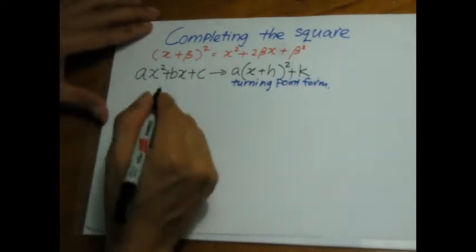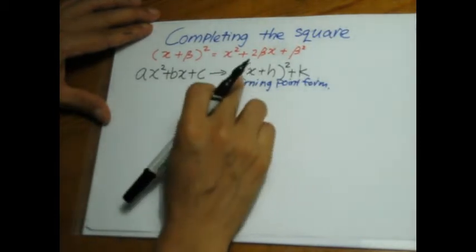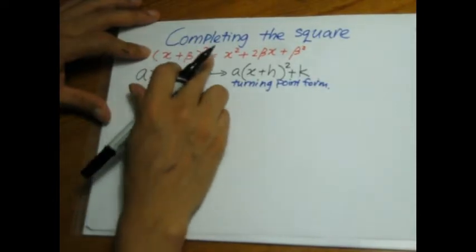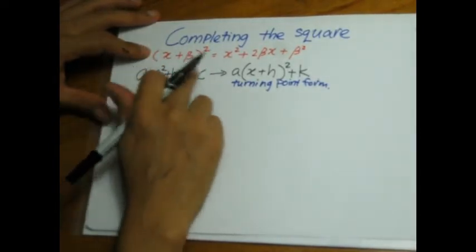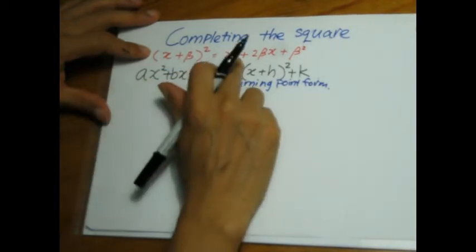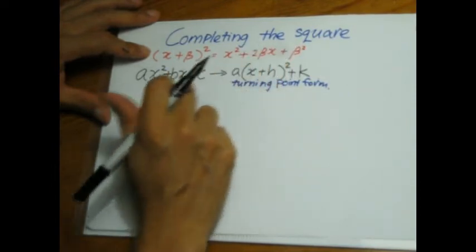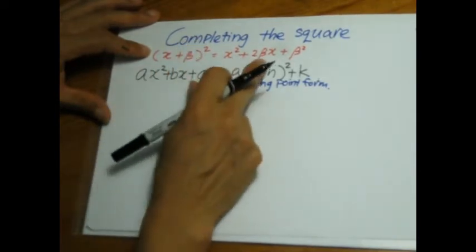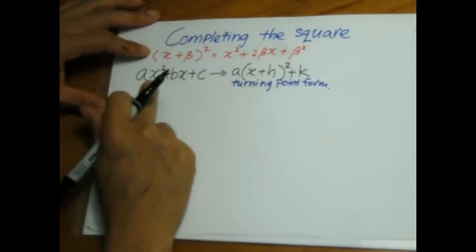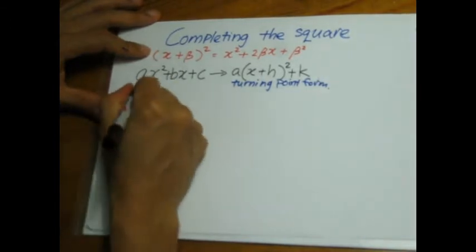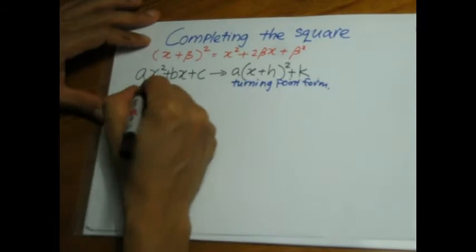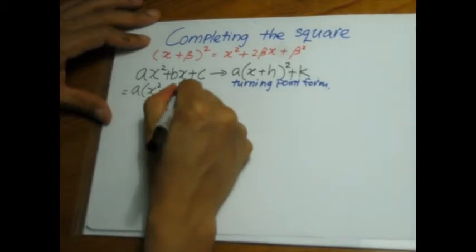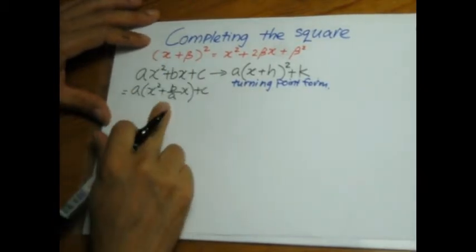So how do we get started? Well, to get started is to recognize that this turning point form is very similar to this particular expansion, x plus beta everything squared. So if I can change this quadratic equation in black into something like the one in red here, then I will be able to change it into the turning point form. So let's get started. To get into something like this, here I have ax squared, so I'll need to factor out the a. So if I factor out the a, I will have x squared plus b over a times x plus c.